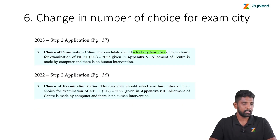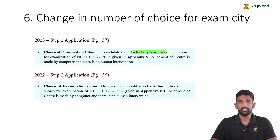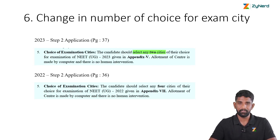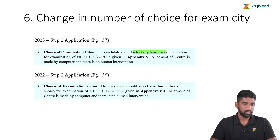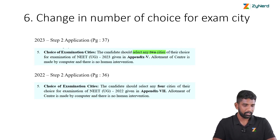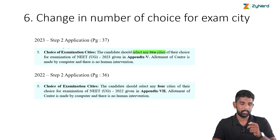There is a change in the number of choices for the examination city. Last year, four cities were given for you to select when filling up the examination centers. But this year that has been limited to only two. So when filling up the application form, you can select two cities of your choice and these cities will have the examination centers you can select.